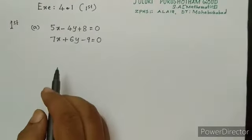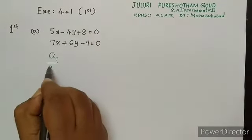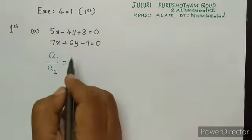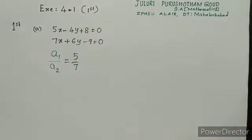Here, first this is a1, this is a2. So we have to write a1 by a2. That is equal to 5 by 7. Is it clear? Right.